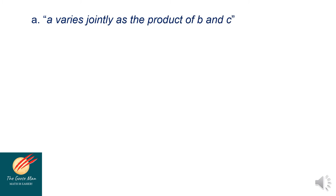Let's have some translation. A varies jointly as the product of b and c, so we have a is equal to k times b times c. If we want to find the value of the constant, divide both sides of the equation by bc, so k is equal to a all over bc.